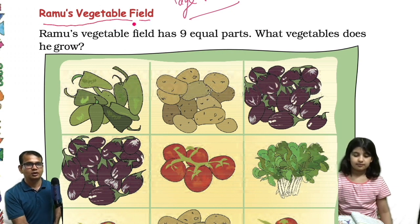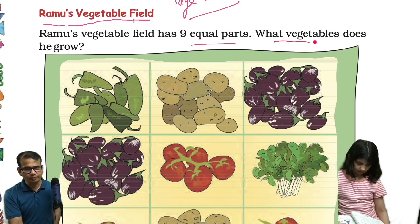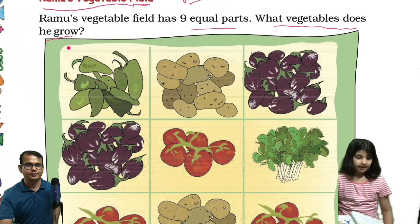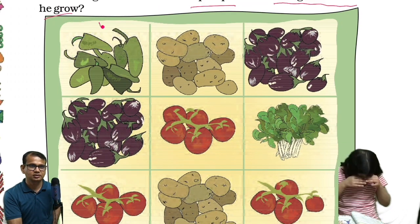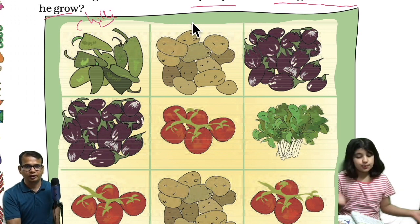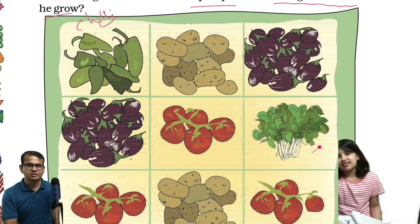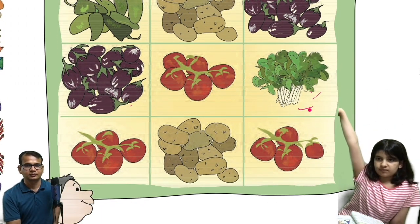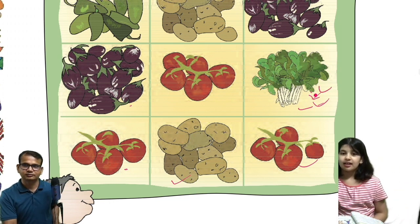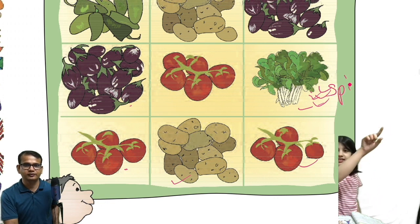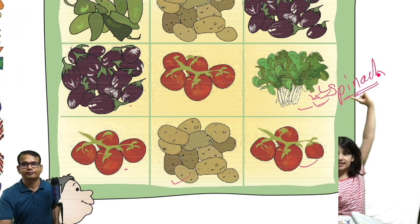Ramu's vegetable field has nine equal parts. What vegetables does he grow? He grows chili, tomatoes, potatoes, brinjels, and spinach. Both of these are brinjel. This one is tomato, this is potato, and this one is spinach — s-p-i-n-a-c-h. Good.